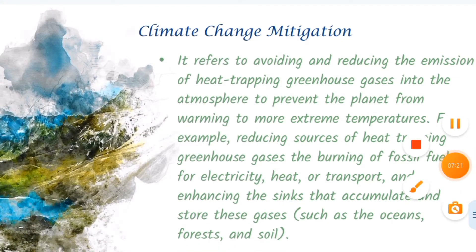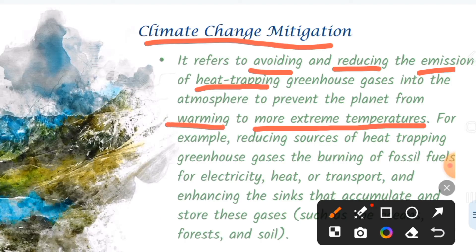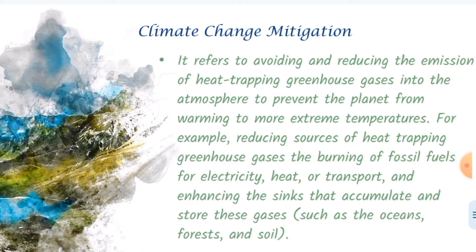Let's come to the mitigation method. It refers to avoiding and reducing the emission of heat-trapping greenhouse gases into the atmosphere to prevent the planet from warming to more extreme temperatures. For example, reducing the source of heat-trapping greenhouse gases — the burning of fossil fuels for electricity, heat or transport — and enhancing the sink of heat-trapping greenhouse gases such as the oceans, forests, and soil.